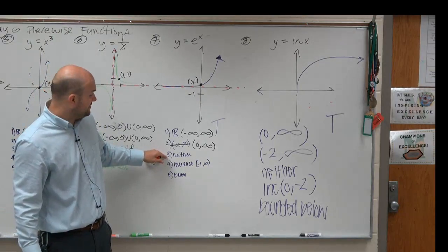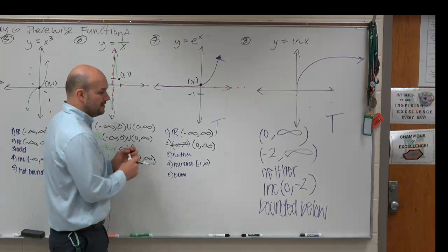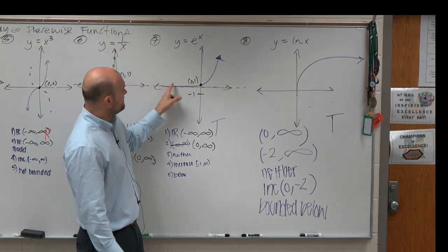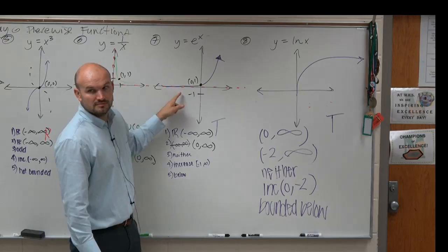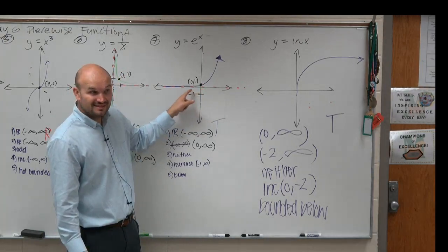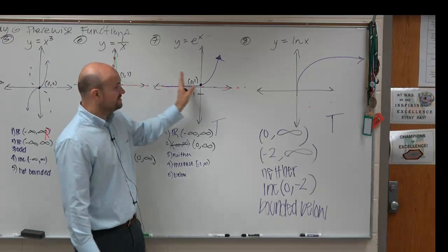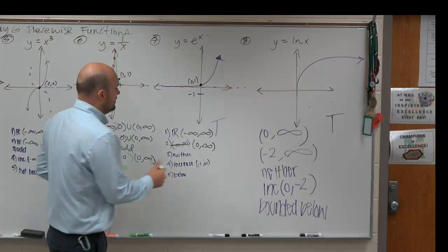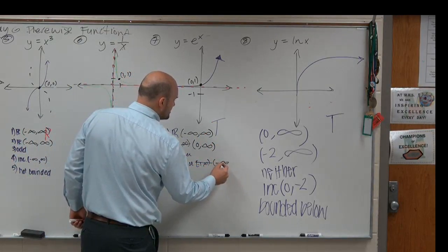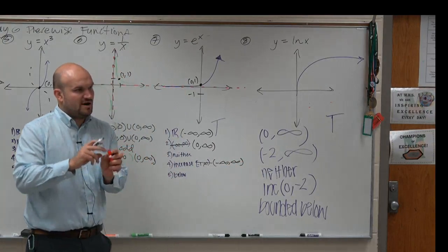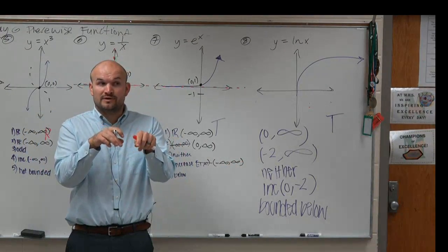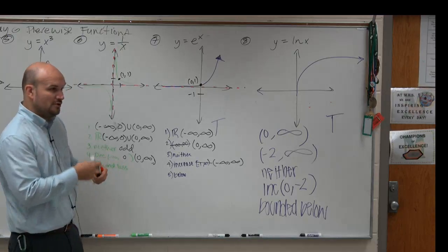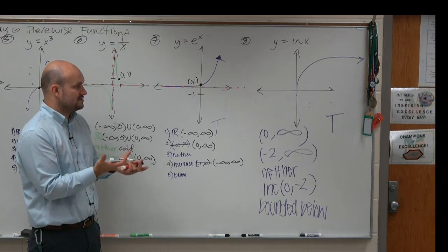It does not have any symmetry, so it is neither. It does increase — walk the roller coaster as far left as you can. From negative infinity to 0, you're going up just a little bit, and from 0 to infinity it's increasing really fast. That's what we call exponential growth. But it's increasing across the whole domain — it's always increasing. If you zoom farther left, you'll see it's very slowly growing, but it is growing. And it is bounded below, because it doesn't go below the x-axis.